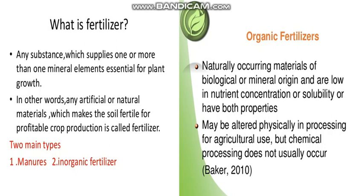When plants prepare their food they absorb minerals from the soil, so there will be a deficiency and the minerals will be depleted in the soil. It means we must add more minerals in the soil for the next plant growth. This is done by applying chemical substances called fertilizers.